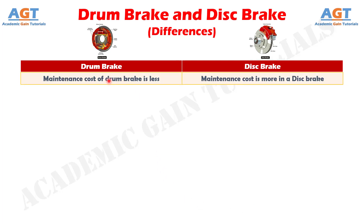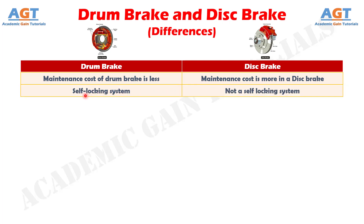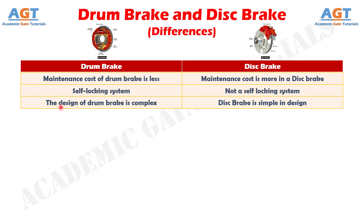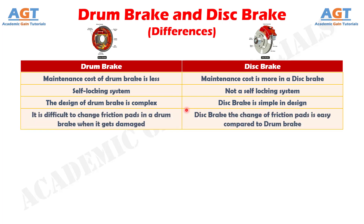Number 9: the maintenance cost of a drum brake is less, whereas the maintenance cost is more in a disc brake. Number 10: the drum brake is a self-locking system, whereas the disc brake is not a self-locking system. Number 11: the design of a drum brake is complex, whereas the disc brake is simple in design. Number 12: it is difficult to change friction pads in a drum brake when it gets damaged, whereas in a disc brake the change of friction pads is easy compared to the drum brake.